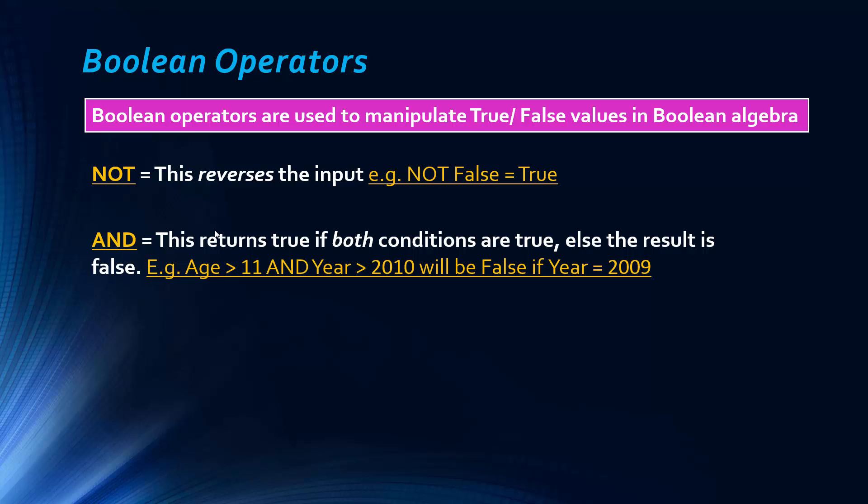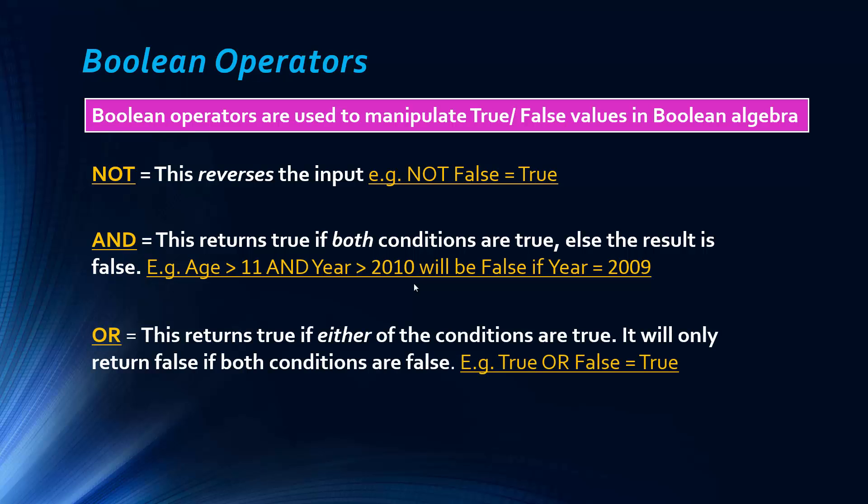So AND returns true if both conditions are true. Otherwise, the result is false. So if the year equals 2009 in this example, it has to be, to evaluate it to true, it has to be the year has to be greater than 2010. So automatically, because both conditions have to be true, the result is false. That's not written particularly helpfully, but it does make sense, I think.